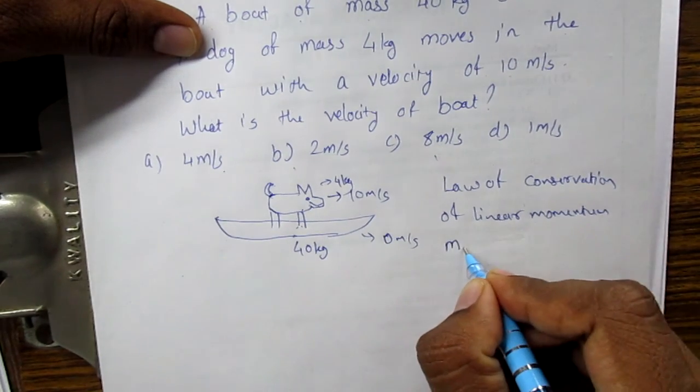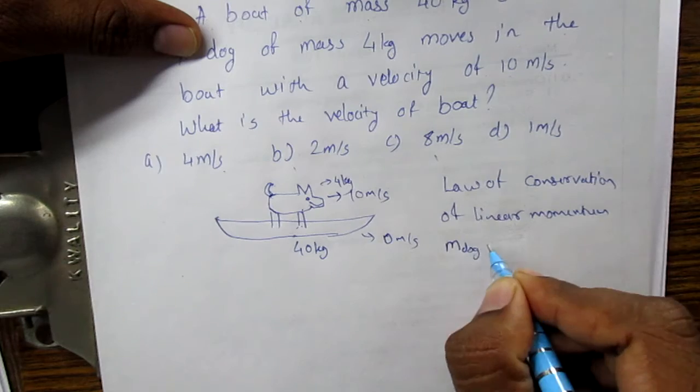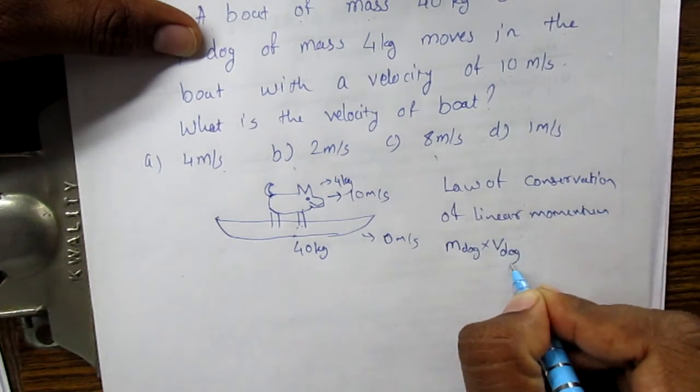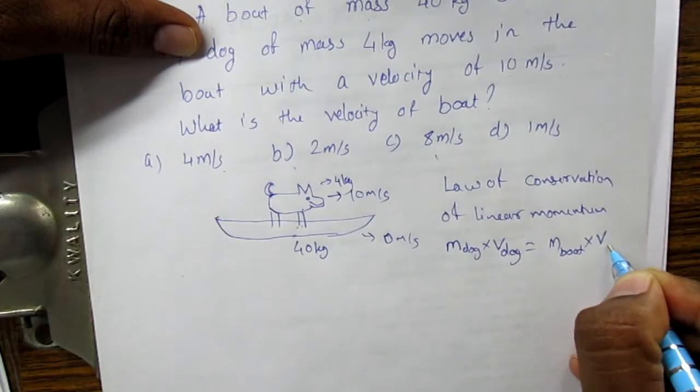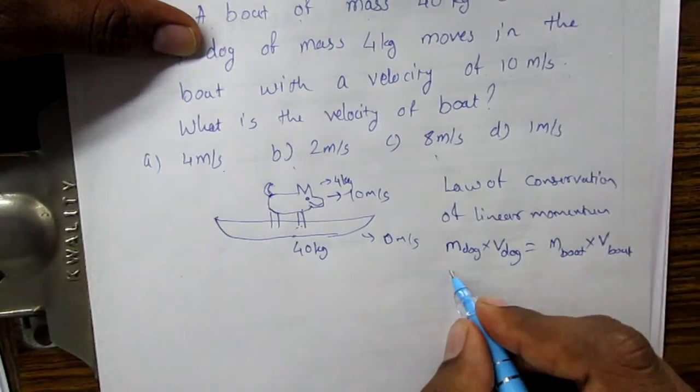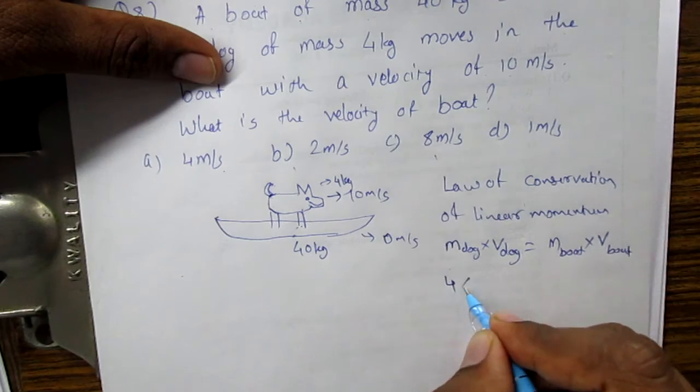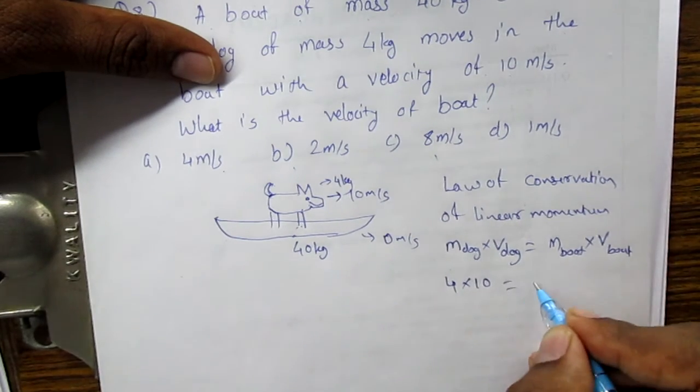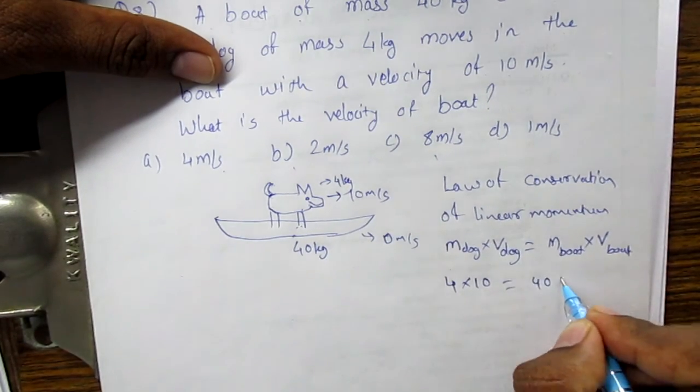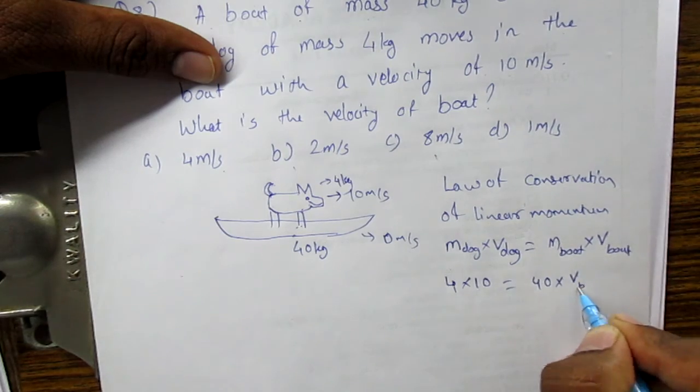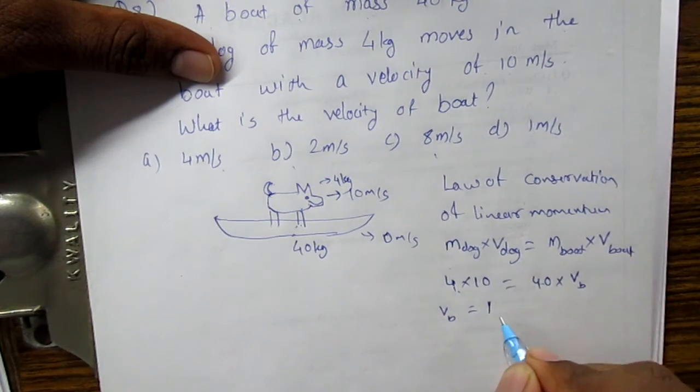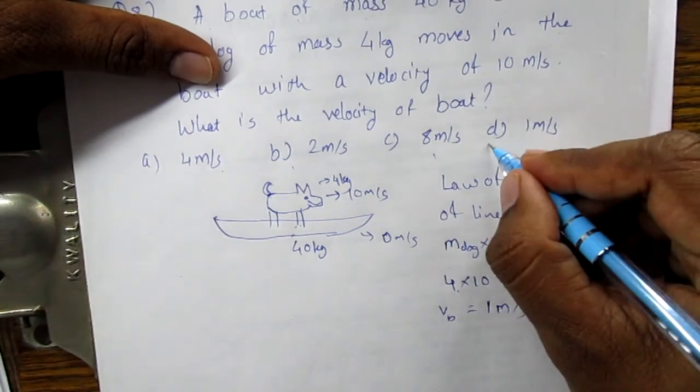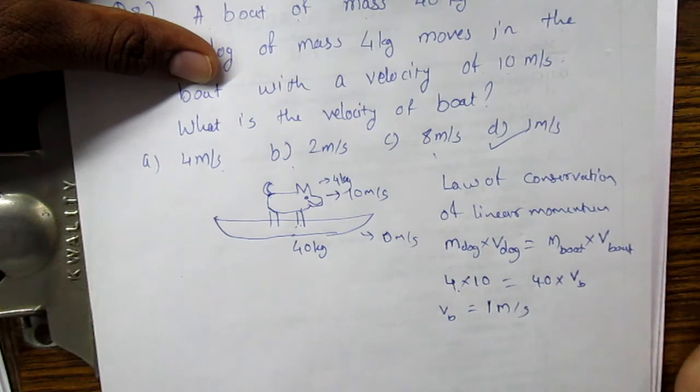So momentum of the dog will be mass of the dog times velocity of the dog equals mass of the boat times velocity of the boat. Mass of the dog is 4 kg, velocity of the dog is 10 m/s. Mass of the boat is 40 kg. Velocity of the boat is unknown. So velocity of the boat will be 4 times 10 divided by 40, which equals 1 meter per second. Option D is the correct answer.